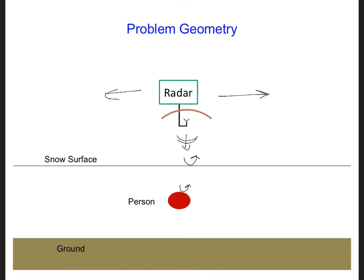And even reflections might be generated within the body itself. And another reflection could be generated at the body-snow interface, and then at the snow-ground interface.